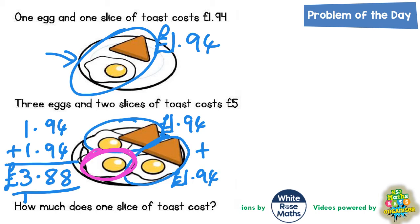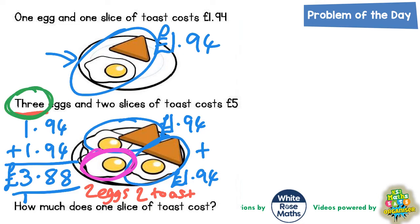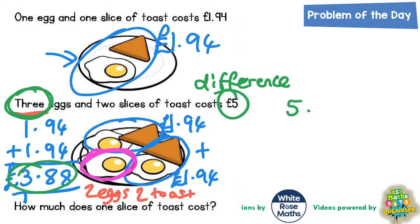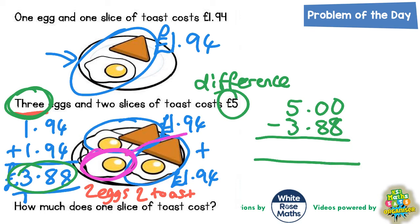But the whole plate with the extra egg — because this £3.88 is actually two eggs and two toasts — the extra egg that gets you up to three eggs and two slices of toast must be the difference from £5 down to £3.88. So if we work out the difference between £5 and £3.88, it will tell us what that extra egg costs.